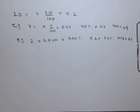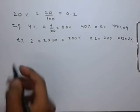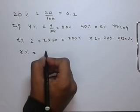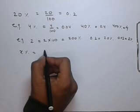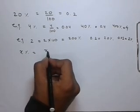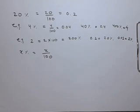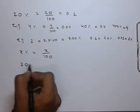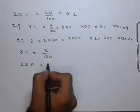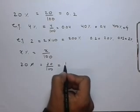As seen above, x% is nothing but the fraction with numerator x and denominator 100. Identifying certain percentages in the reduced form of the fraction can be useful. For example, whenever we have to calculate 20%, we can use 20 by 100, which equals 1 upon 5.